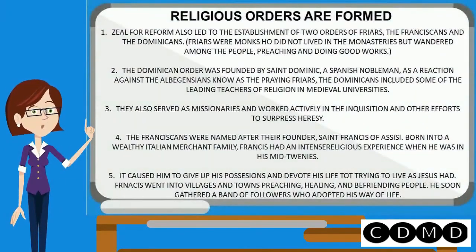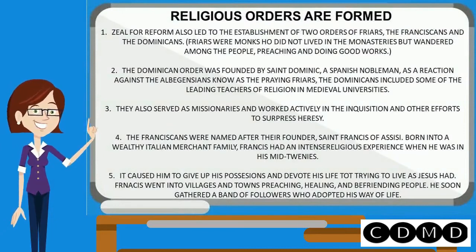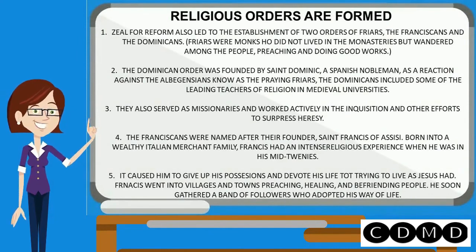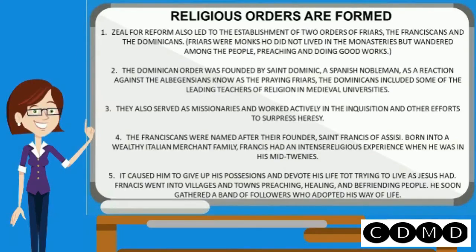Religious Orders Are Formed. Zeal for reform also led to the establishment of two orders of friars — the Franciscans and the Dominicans. The Dominican Order was founded by Saint Dominic, a Spanish nobleman. Known as the Preaching Friars, the Dominicans included some of the leading teachers of religion in medieval universities.